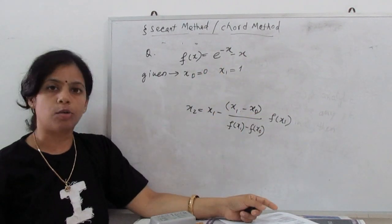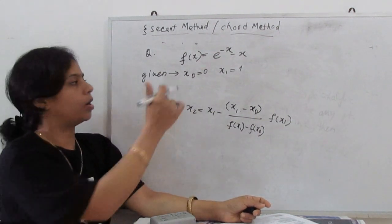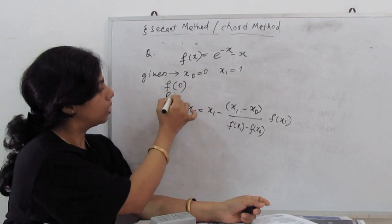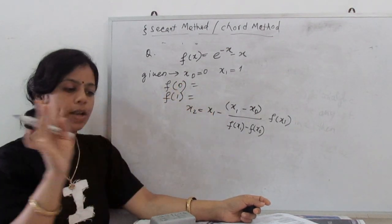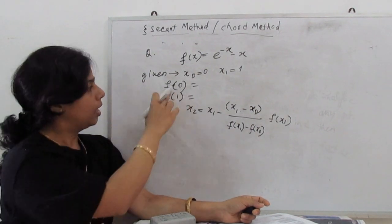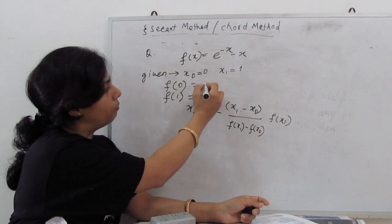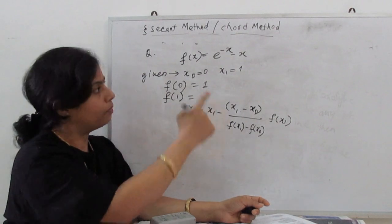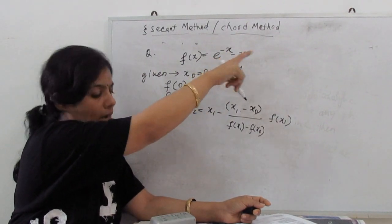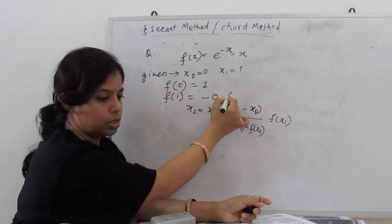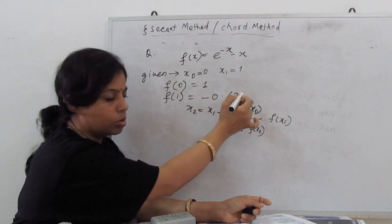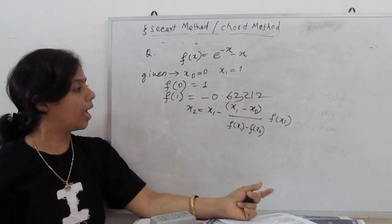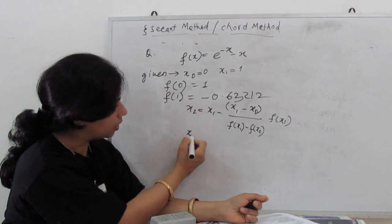First, we calculate the function values at these points. f(0) = 1 (since e^0 = 1). f(1) = e^(-1) × 1 = -0.6263212. We substitute these values into the formula and solve.